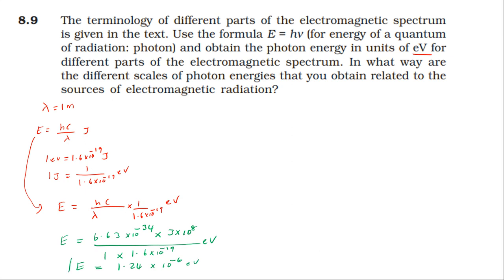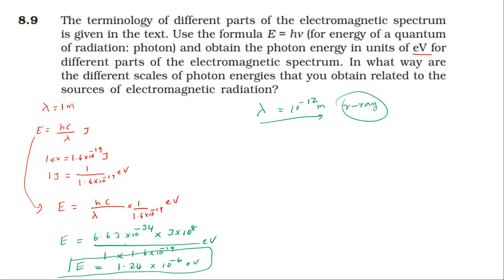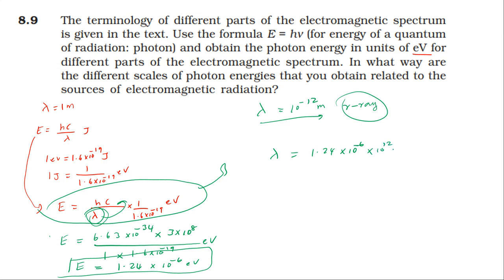Substituting values, the general result is E = 1.24×10⁻⁶/λ electron volts, where λ is in meters. For gamma rays with wavelength around 10⁻¹² meter, energy ≈ 1.24×10⁶ electron volts. That is 10⁶ eV range. Gamma rays correspond to nuclear energy levels.